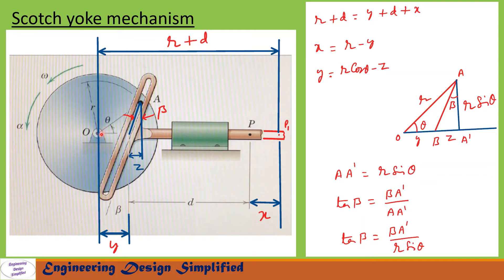The distance OA is r and this is angle theta. The component of r along the horizontal can be written as r·cosθ. Let us assume the distance from a reference point to the center of the slot is z, and from the center of the slot to O is y. From this diagram we can write: y = r·cosθ − z.